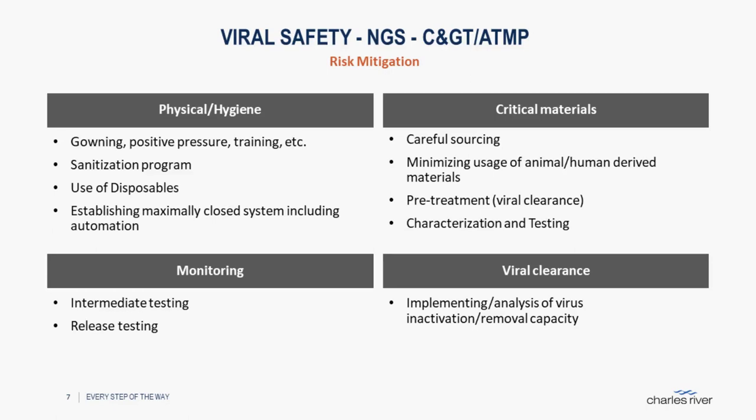The third box is monitoring: while the process is running you should do intermediate testing and release testing, based on the risk assessment you have performed. The fourth box, which I personally regard as the most important safety tool, is the viral clearance capacity of the downstream process to purify, remove, or inactivate potential viral contaminants.